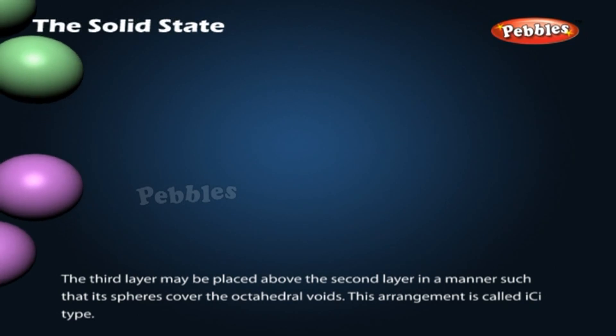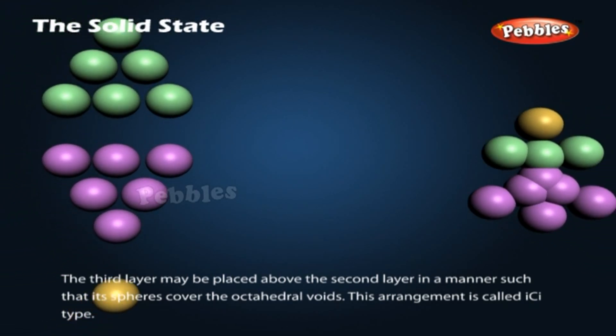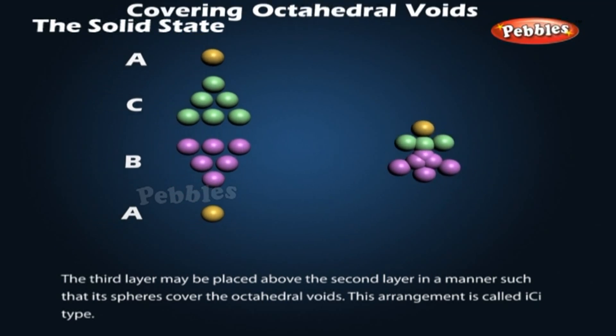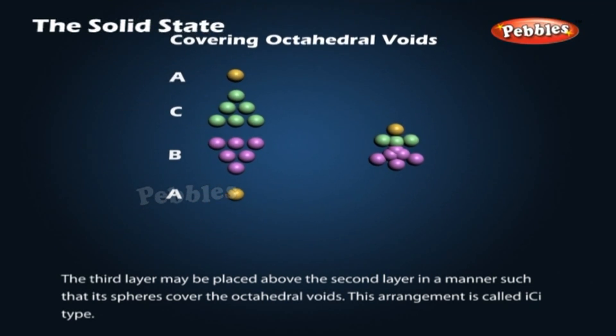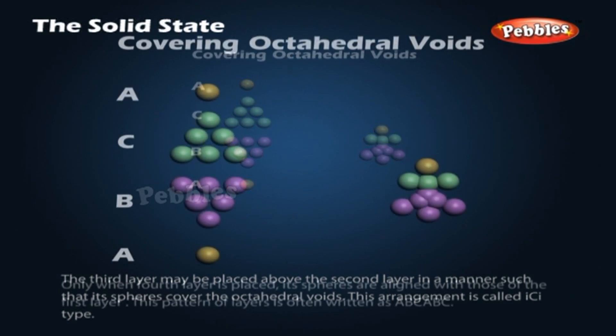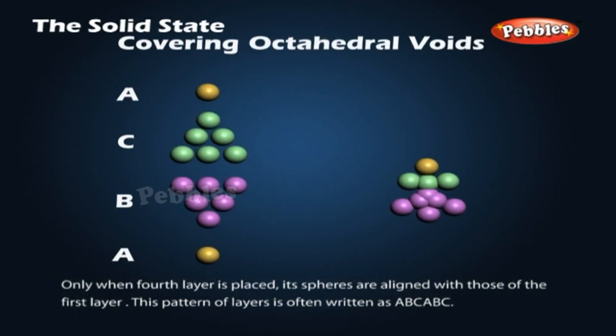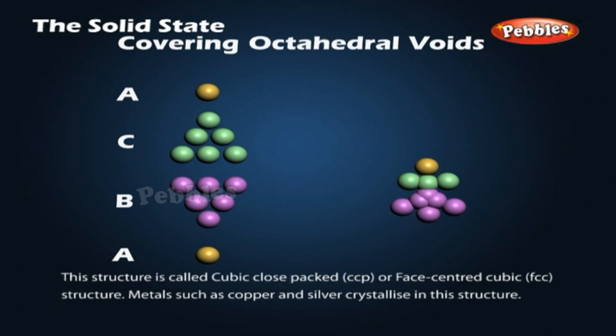When the third layer is placed to cover the octahedral voids, this arrangement is called ABC type. Only when the fourth layer is placed are its spheres aligned with those of the first layer. This pattern is written as ABCABC and the structure is called cubic close-packed (CCP) or face-centered cubic (FCC) structure. Metals such as copper and silver crystallize in this structure.